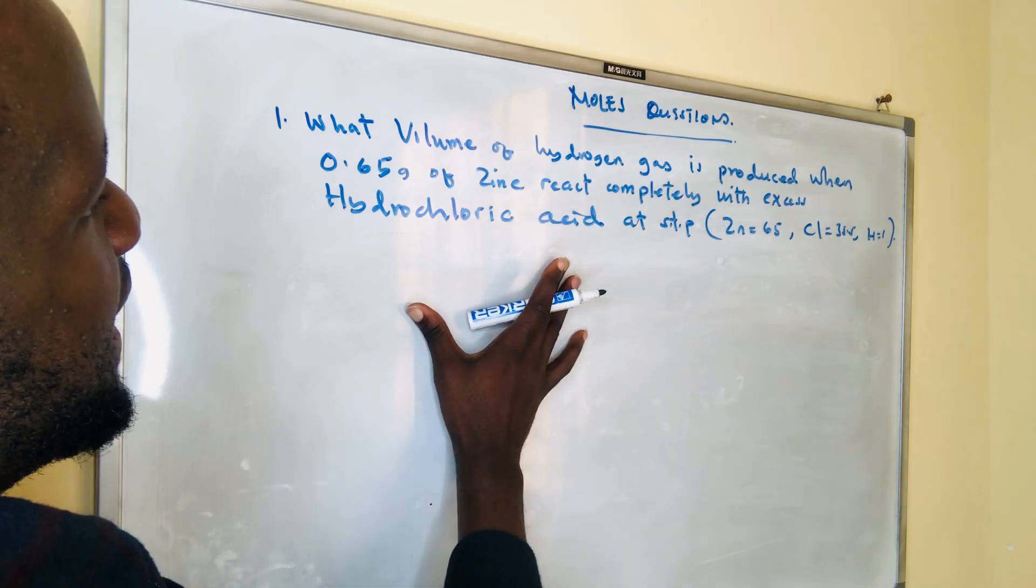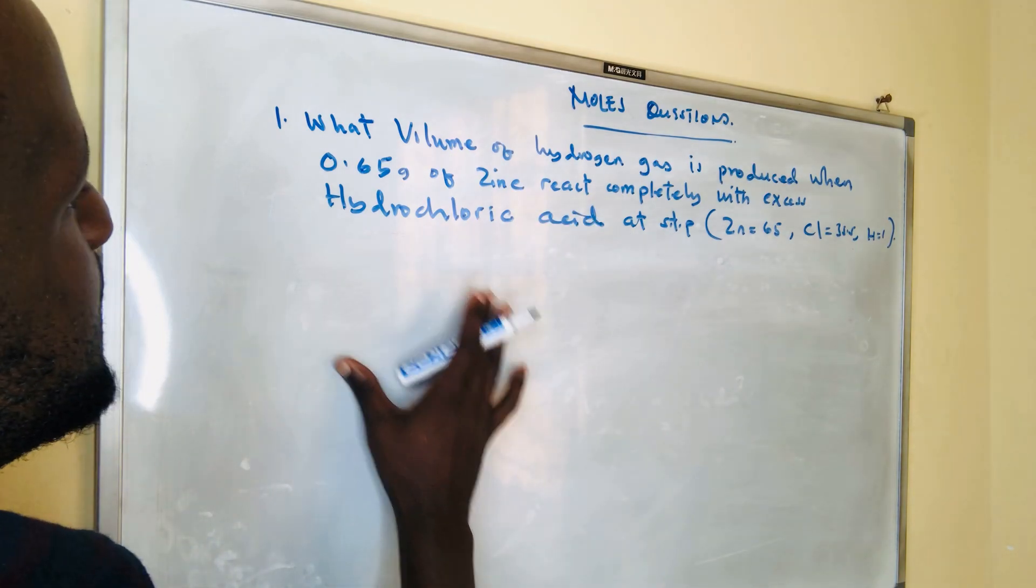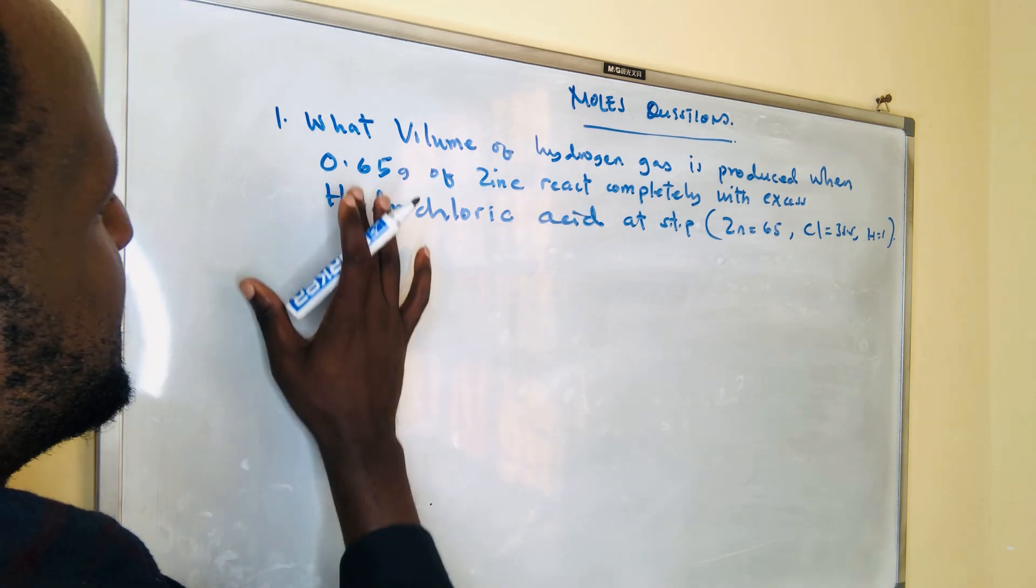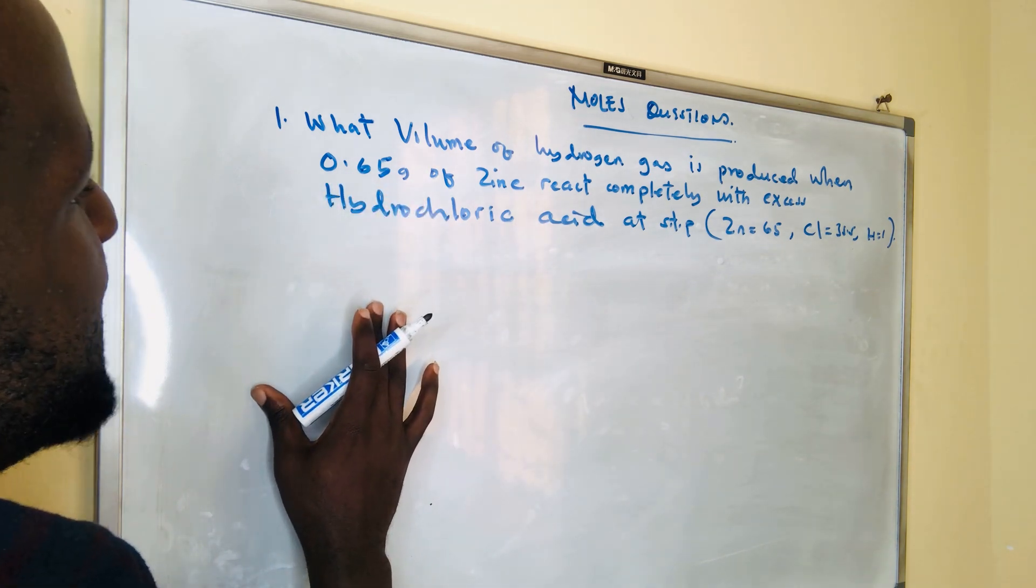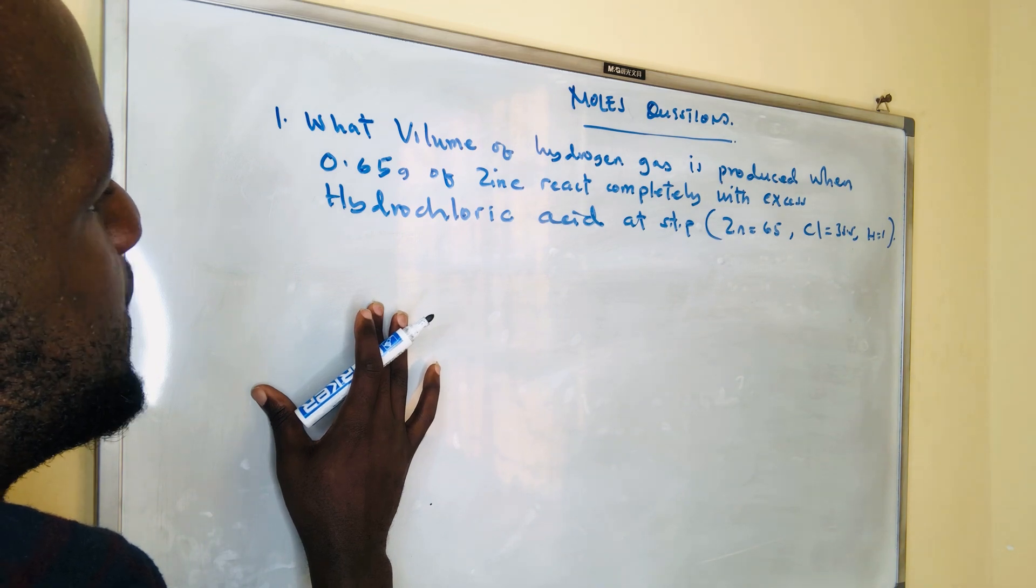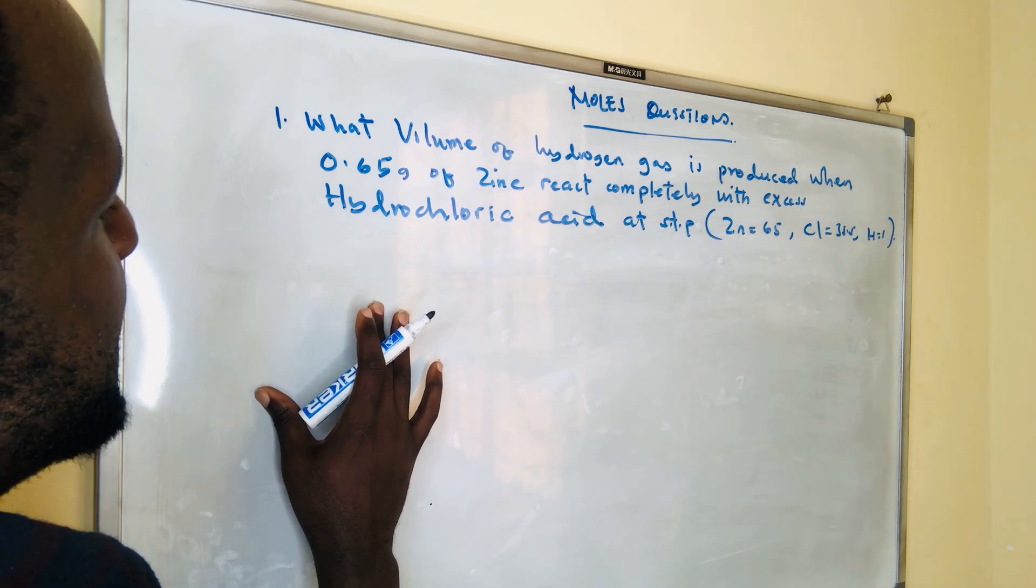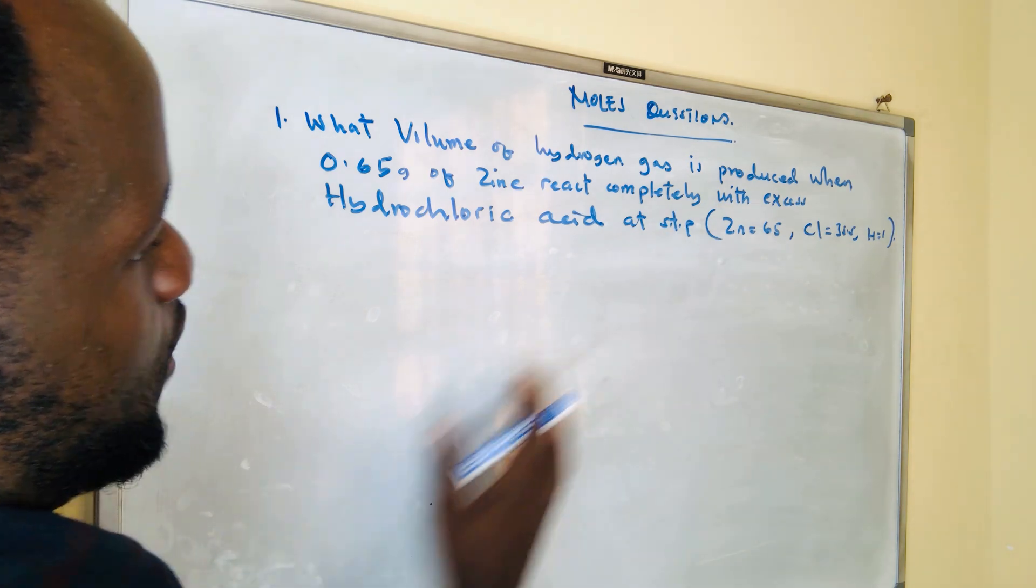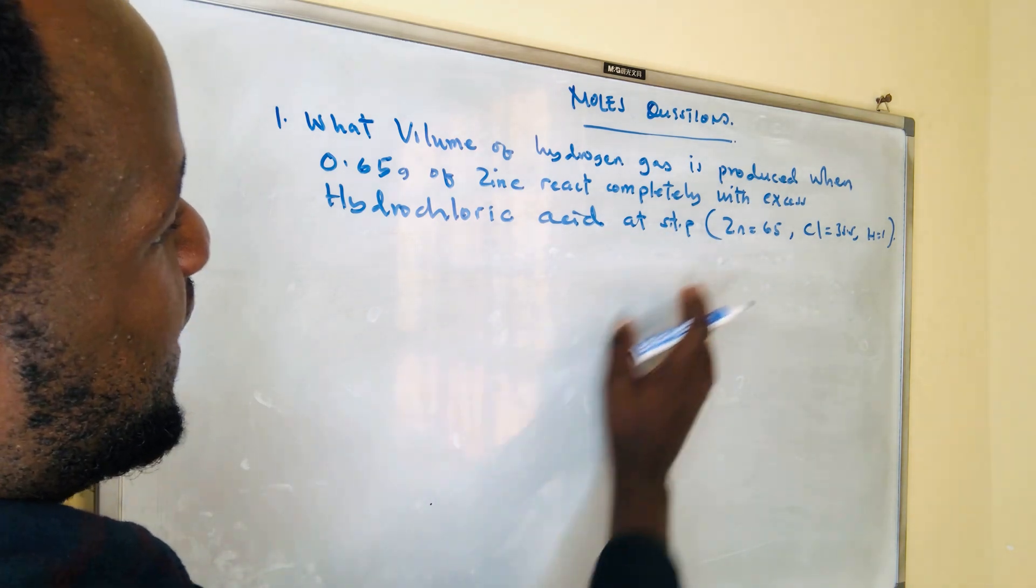So guys, today we'll solve a mole concept problem: What volume of hydrogen gas is produced when 0.65 gram of zinc reacts completely with excess hydrochloric acid at standard temperature and pressure (STP)?